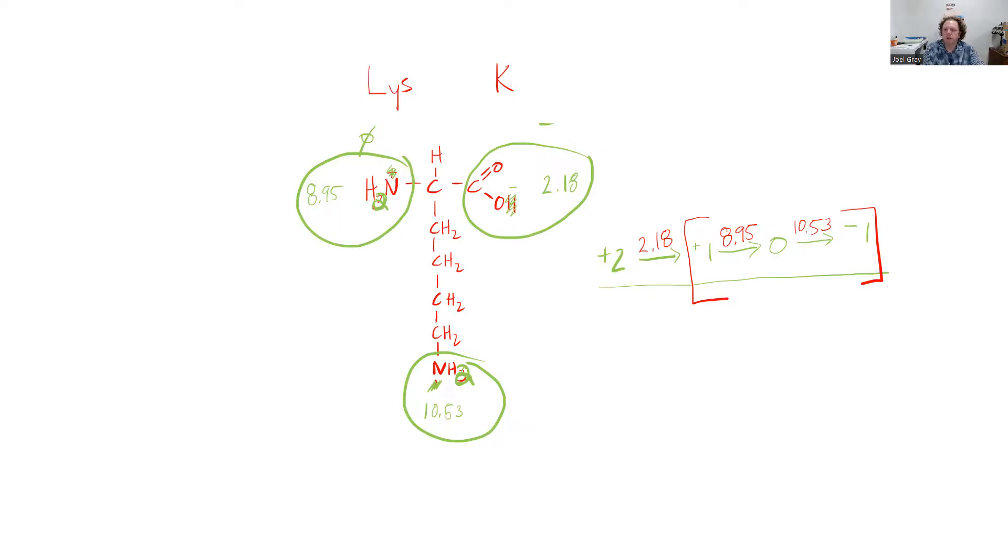The only pKa values are the ones that flank the 0 to +1 and 0 to -1 charge transition. So to calculate my pI, all that I'll do is 8.95 plus 10.53 divided by 2.